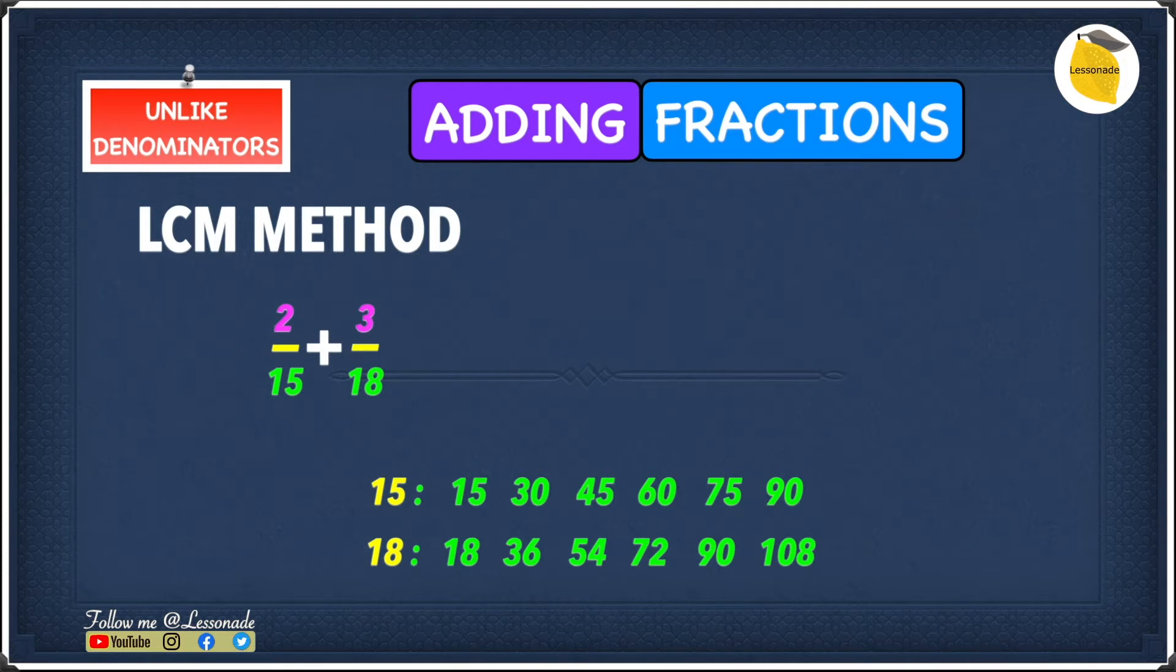The next thing we're going to do is find the lowest common multiple. The lowest common multiple in this case is 90.